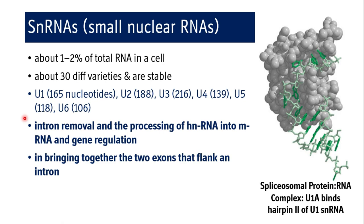What is most important about this miscellaneous RNA is the function they are subserving. snRNAs help in intron removal and the processing of hnRNA into mRNA and gene regulation. In the process of removal of intron and processing of hnRNA into mRNA — that is maturation of mRNA — and gene regulation, these small nuclear RNAs have a very important role. They bring together the two exons that flank an intron after its removal.